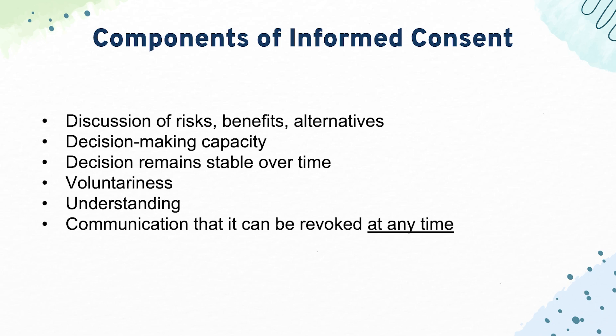The next component is that the patient has to have decision-making capacity. We'll get to the differences between capacity and competence in a bit. Capacity is the ability for a patient to reason through the options they're given and understand what's going on. That's important for informed consent, because a patient can't give informed consent if they don't understand their options. Questions can ask about this — for example, giving a patient with altered mental status and asking why they could not give informed consent.